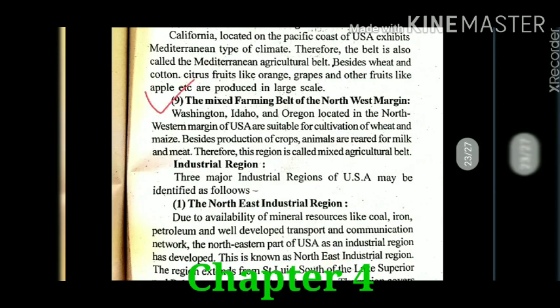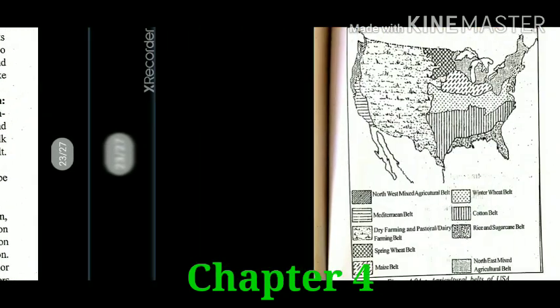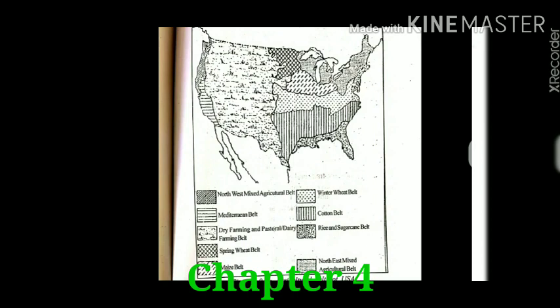The last belt is the mixed farming belt of the northwest margin. In Washington, Idaho, and Oregon, mixed farming is practiced. Mainly wheat and maize production occurs here, and along with crop production, animal rearing and milk production also take place here — that is why it is called a mixed farming zone.